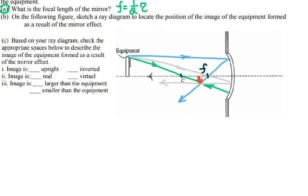That is exactly what they ask in the next question: based on your ray diagram, check the appropriate spaces to describe the image of the equipment formed by the mirror effect. The image is inverted, the image is real, and the image is smaller than the equipment.